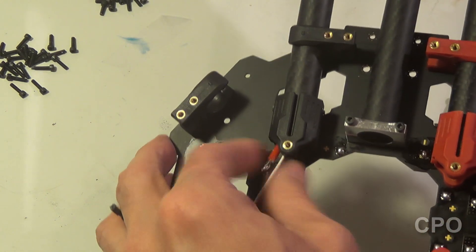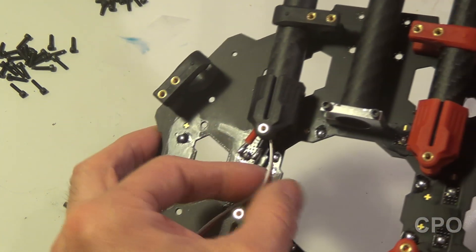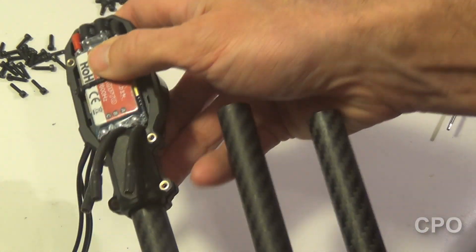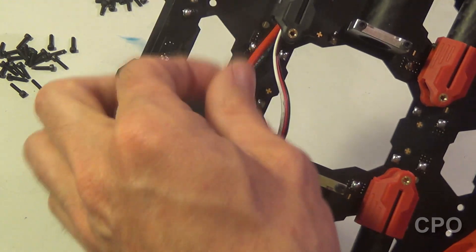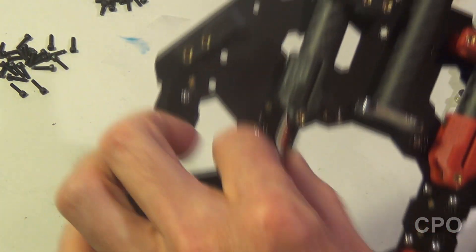Once you get those pulled through, then you're going to make sure that you get your motor mount pushed onto the end of the boom. And remember, in this orientation I'm doing, it's upside down, right? So make sure that you have your motor facing the right direction.